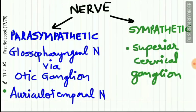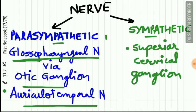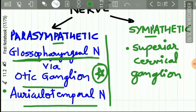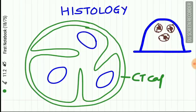The nerve supply of the parotid can be studied under parasympathetic and sympathetic supply. The parasympathetic nerve supply is by the glossopharyngeal nerve via the otic ganglion and auriculotemporal nerve — this is very important for MCQs. The sympathetic nerve supply is by the postganglionic fibers of the superior cervical ganglion.